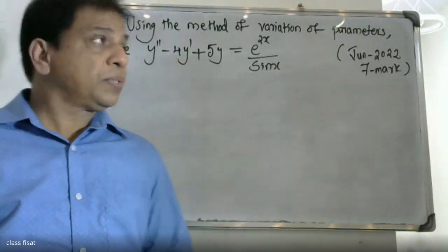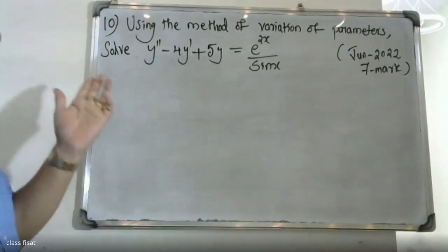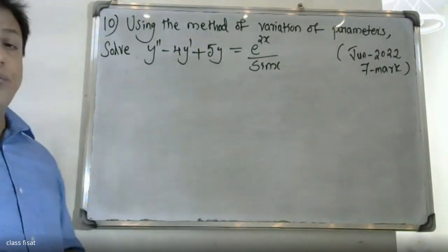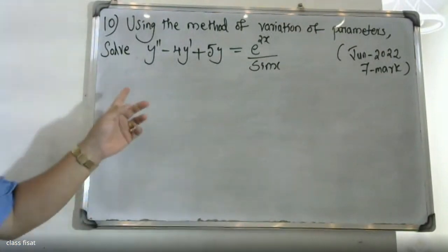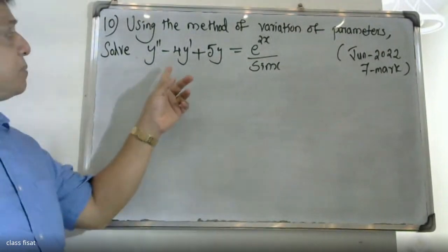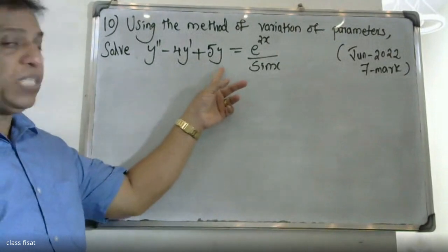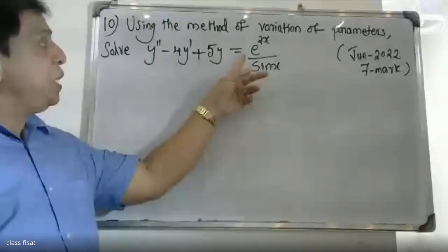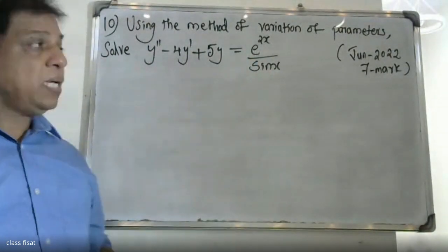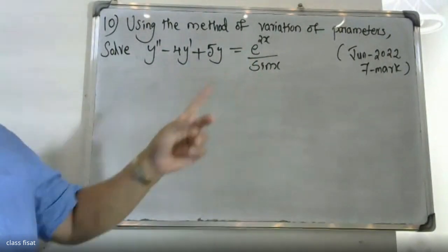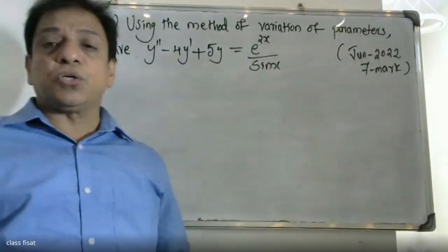Good morning students. The question: using the method of variation of parameters, solve y'' - 4y' + 5y = e^(2x) / sin(x). This is a university exam question from June 23rd.